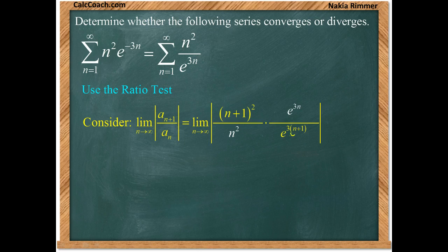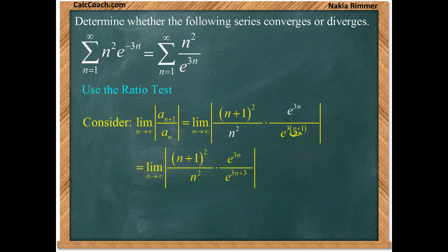Next what we're going to do is distribute. We take this 3 and multiply it across. And what we have is e to the 3n plus 3, which we can write as e to the 3n times e to the 3. And now we can cancel. The e to the 3n from the numerator and denominator, and be left with an e cubed in the denominator.